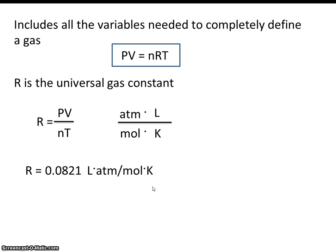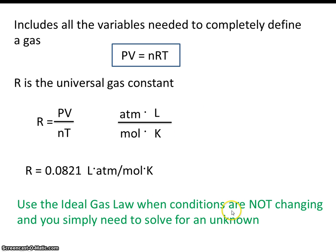Now, whenever you're going to use the ideal gas law, it turns out it's not very difficult to know when. In all the gas laws we've looked at so far, there have been initial conditions and final conditions. Notice there's no initial conditions over here and final conditions over here. It's just the pressure, volume, moles, and temperature of a gas. So nothing is going to be changing. So you'll use the ideal gas law when conditions are not changing. When you simply need to solve for an unknown.